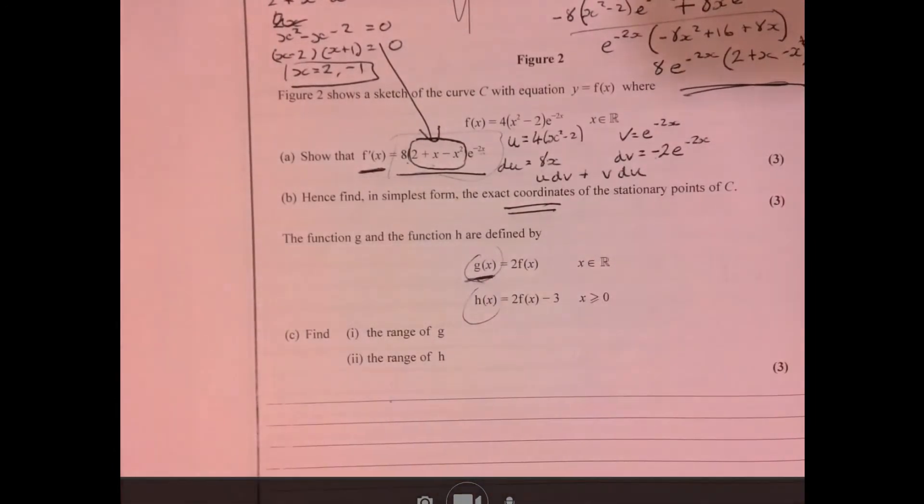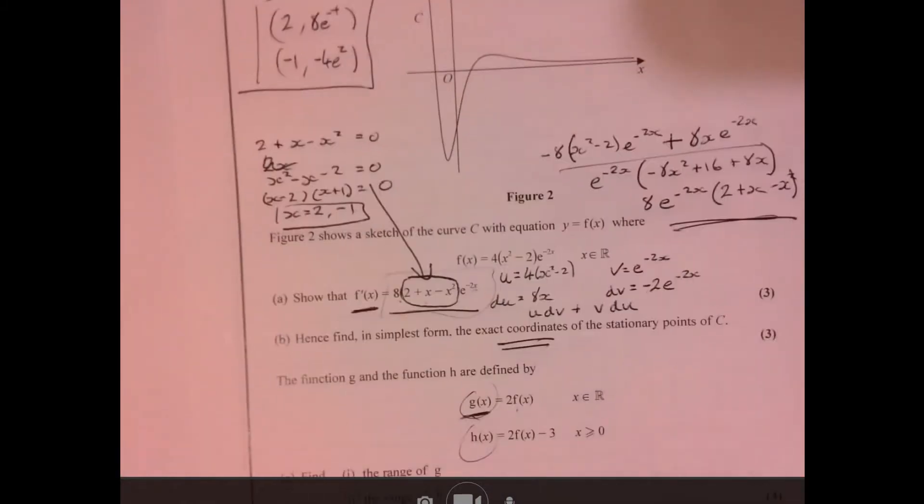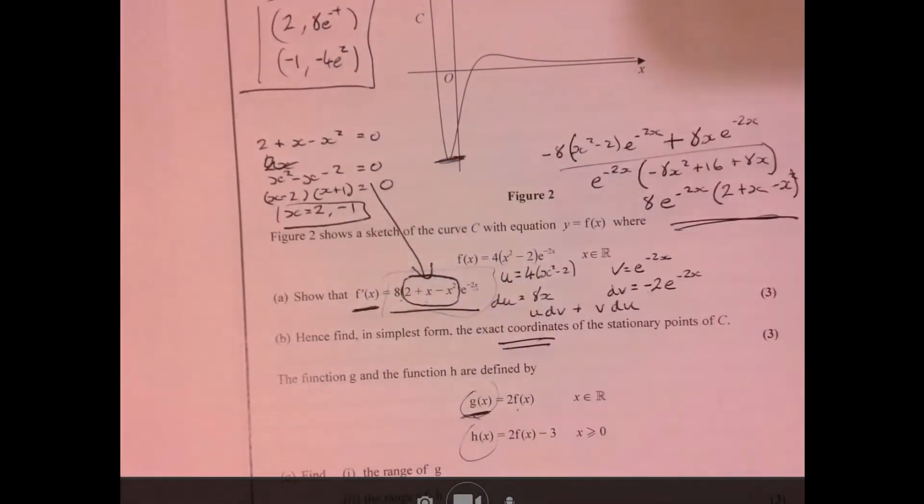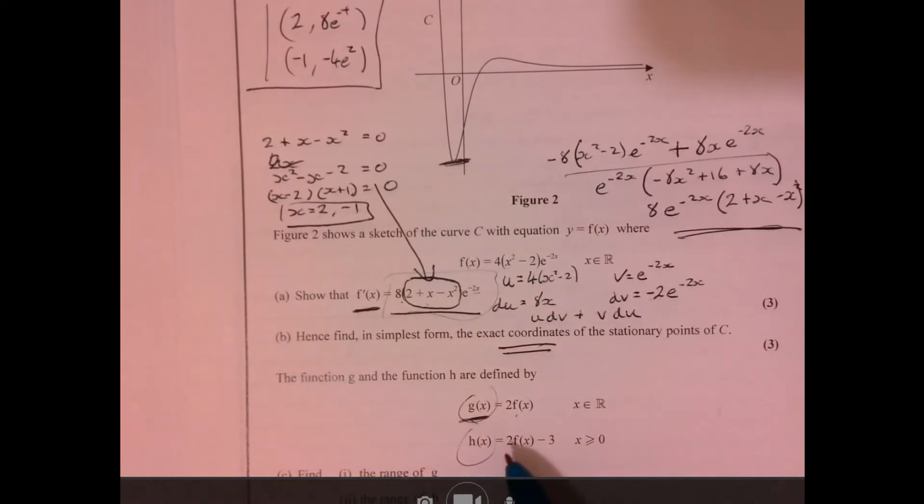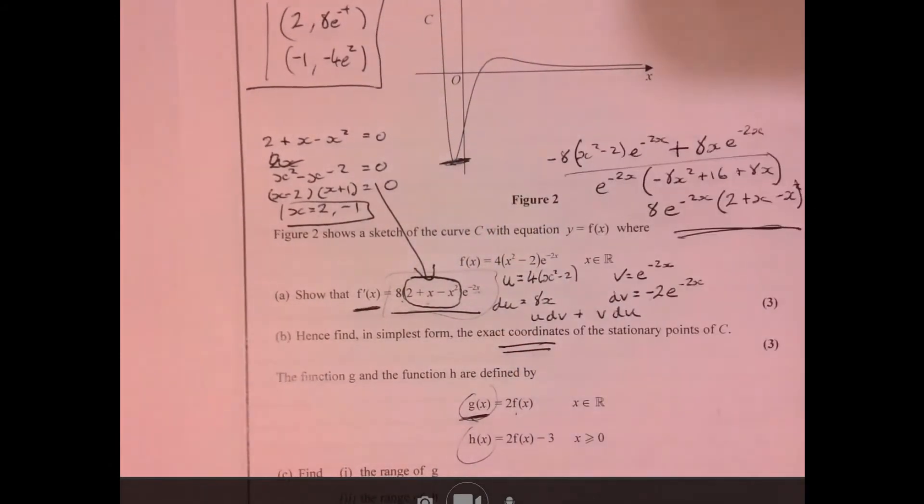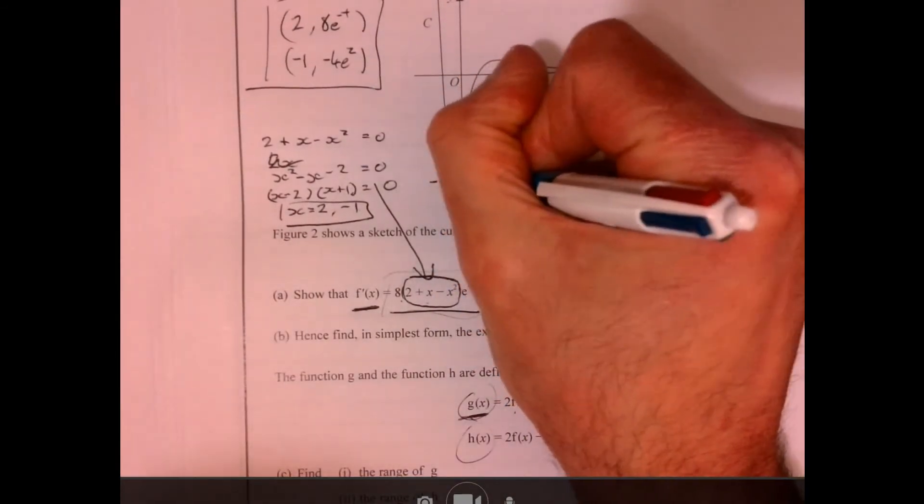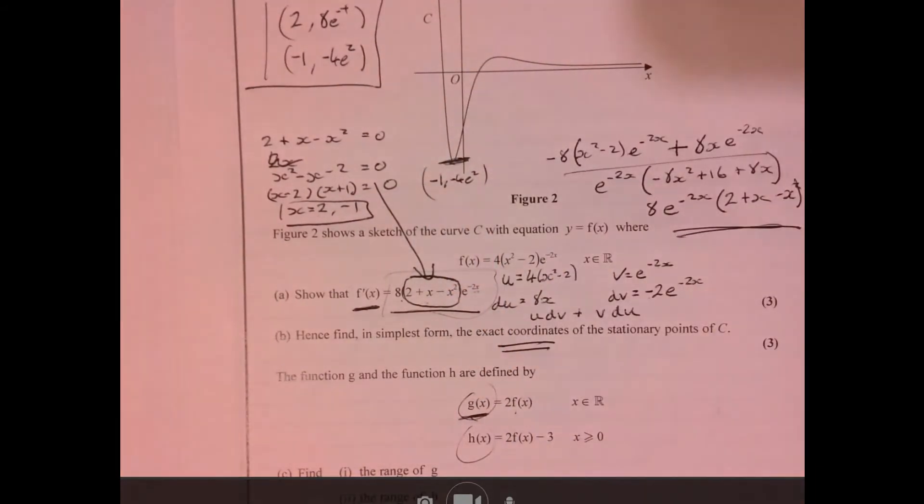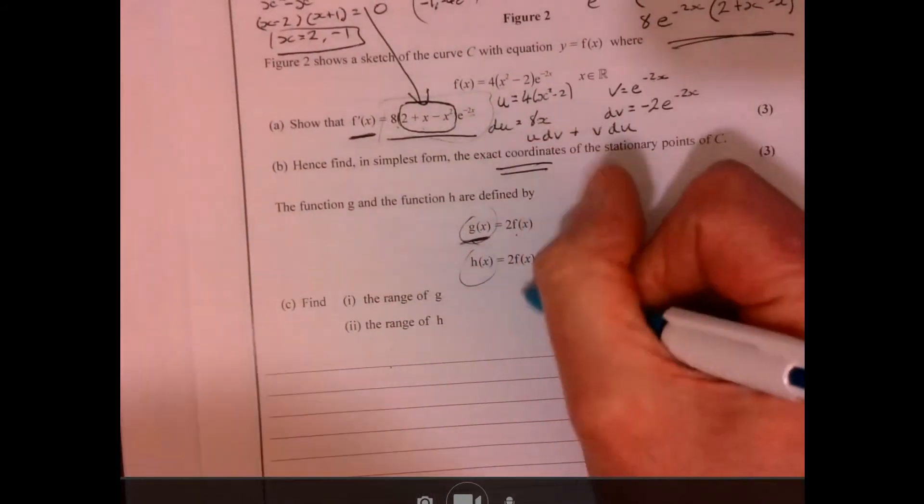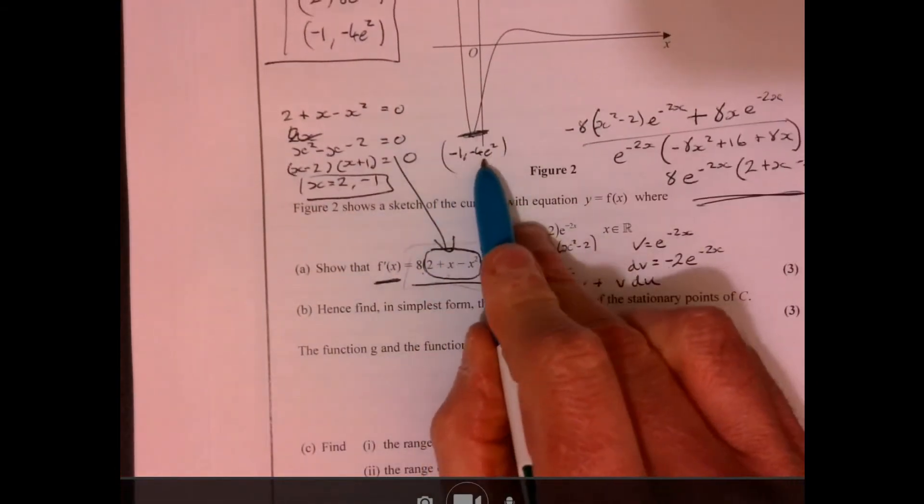This one's slightly easier because I just need to know the range of answers. So if I think about the function of x, so the important point there is just that. So if I'm thinking about 2 multiplied by that, then I'm just looking at this point here times 2. And then that would give me the range there. So that point there was minus 1 minus 4e squared. So the range of g, function g, must be simply two lots of this.